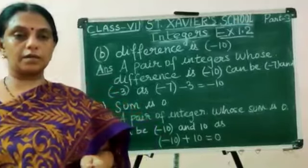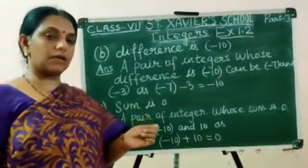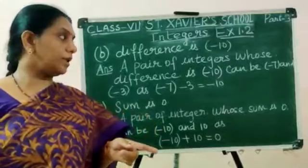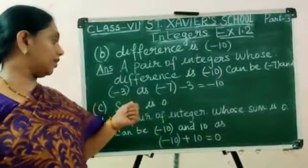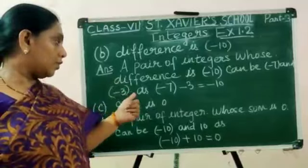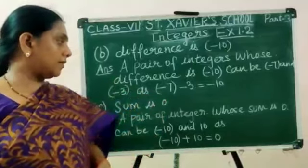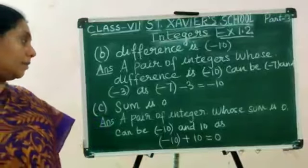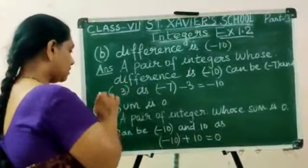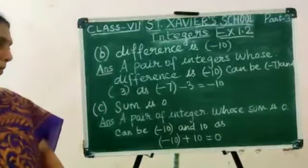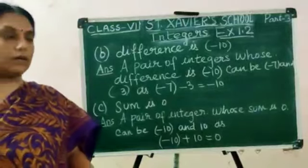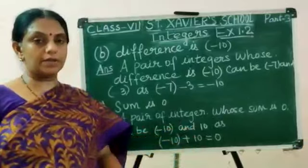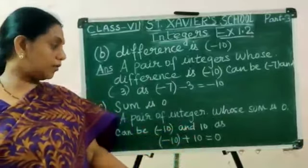The second one: a pair of integers whose difference is minus 10 can be minus 7 and 3, as minus 7 minus 3 becomes minus 10. The next one: a pair of integers whose sum is 0 can be minus 10 and plus 10, as minus 10 plus 10 equals 0.